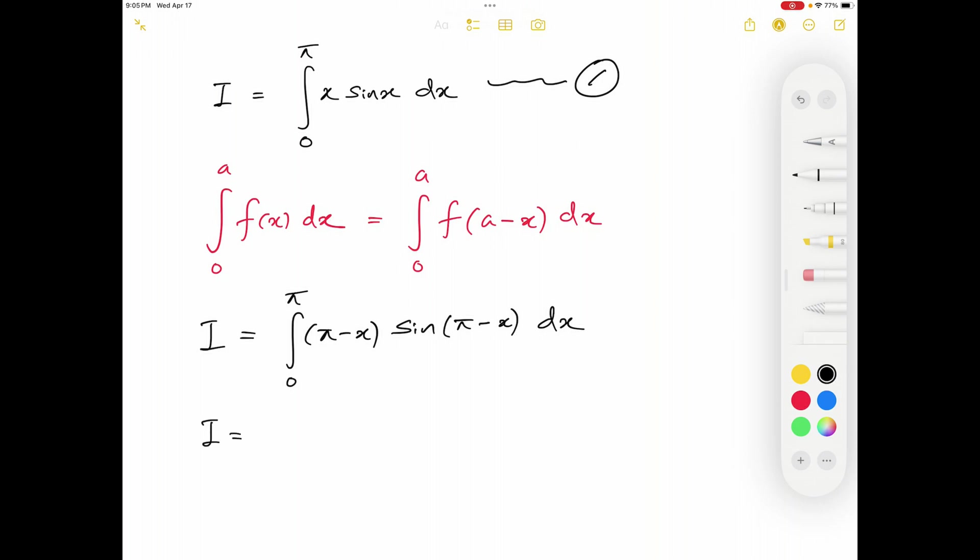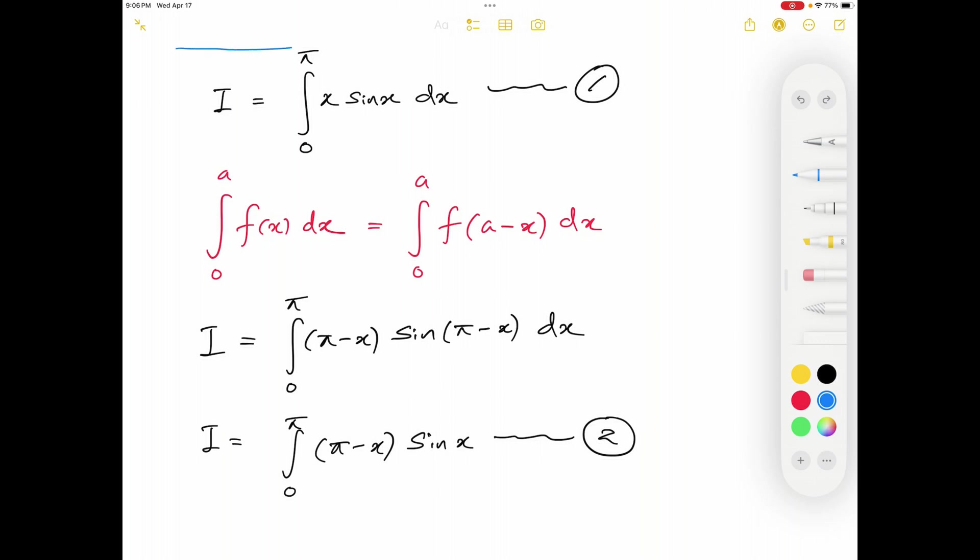Well, of course we can simplify this one little more. My integration I will be equal to integral from 0 to π. I have π minus x. How about sin(π - x)? Sin(π - x) is equal to sin x. If you still remember trig. I'm going to label this integration as integration number two. Now I have two equations for the same integration I.